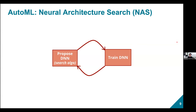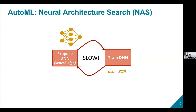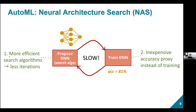Let me cover NAS 101. In the canonical approach, a search algorithm proposes a deep neural network, you train it to get accuracy, feed that accuracy back to the search algorithm, and it proposes a better network. You repeat this until you find a model matching your criteria. This works but is very slow because it's iterative and training takes hours, days, or even weeks. Two ways to speed it up: more efficient search algorithms, and faster evaluation by replacing or augmenting training with a proxy.